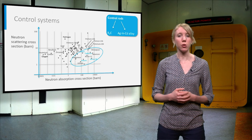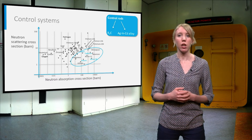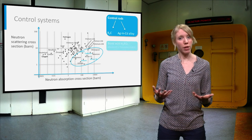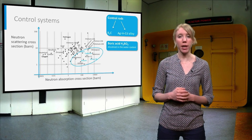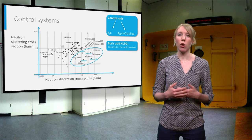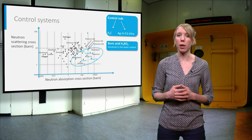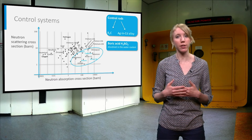A second method used in pressurized water reactors to control the rate of a fission reaction is by dissolving boric acid into the reactor water. The concentration of the dissolved boric ions is then adjusted by passing the water through an ion exchanger.